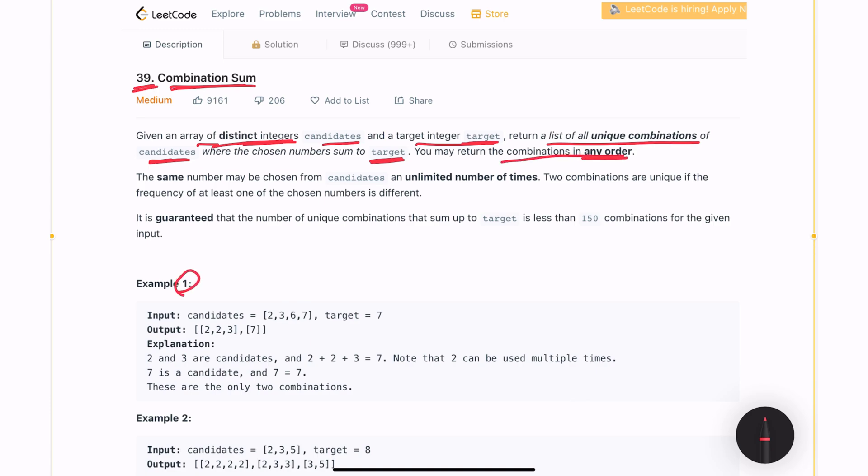In example number 1, the candidates are 2, 3, 5, 6, and 7, and the target is 7. So based on these numbers we can build a total of two arrays or two combinations of numbers which will give us the total 7.